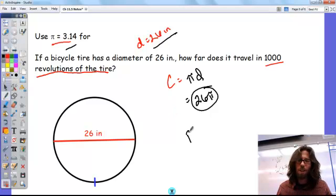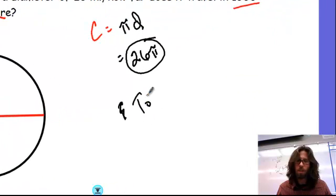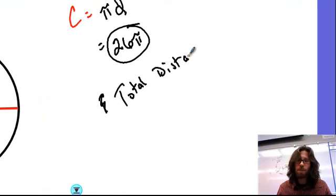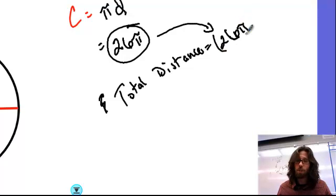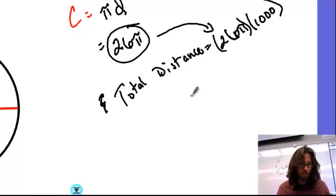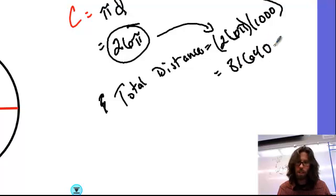And so I'm going to go ahead, now if I want to know the total distance, I'm just going to take that circumference, 26 pi, and I'm going to multiply it times 1,000. And you can use a calculator for that, or just some handwritten stuff, and we would wind up getting that the total there is just going to be right at about 81,640 inches.